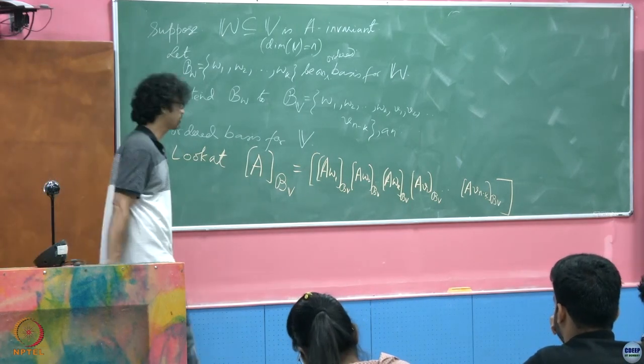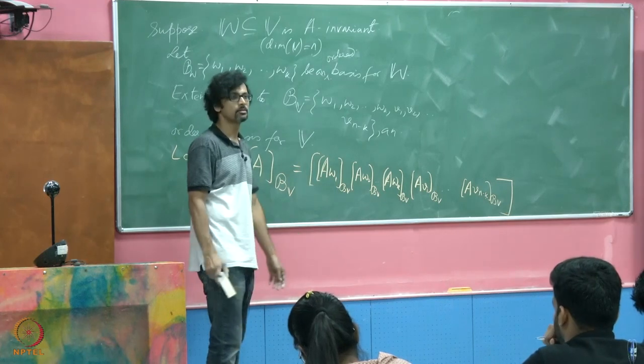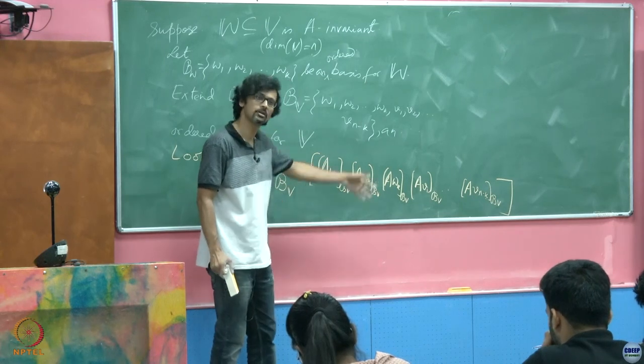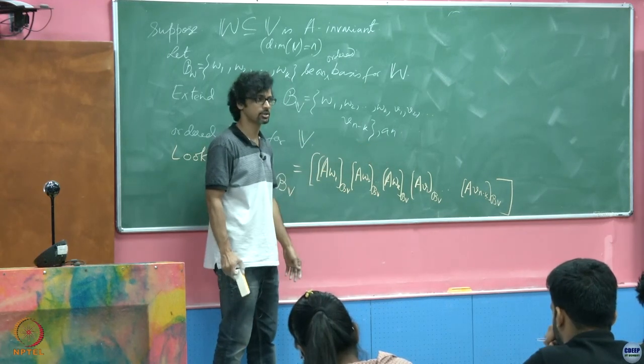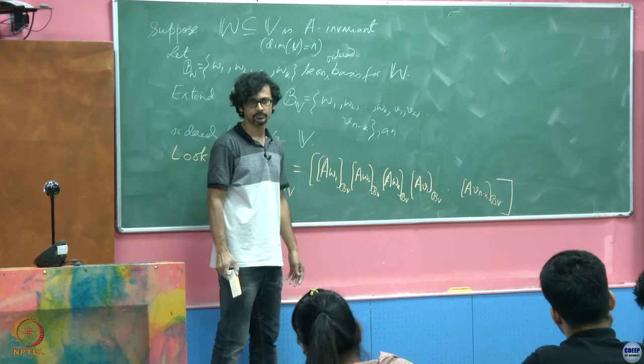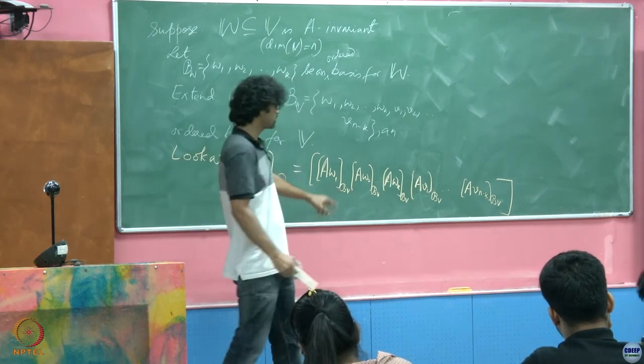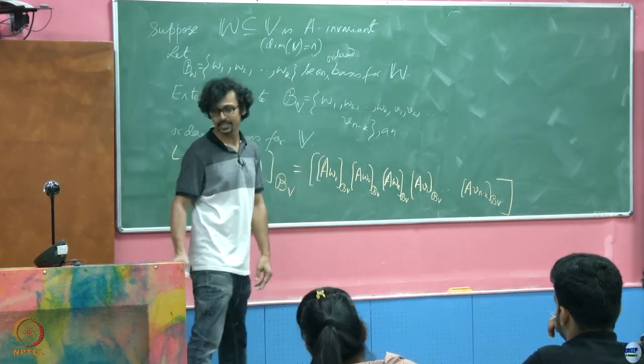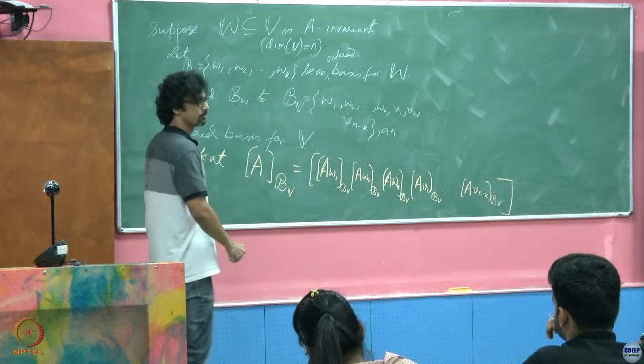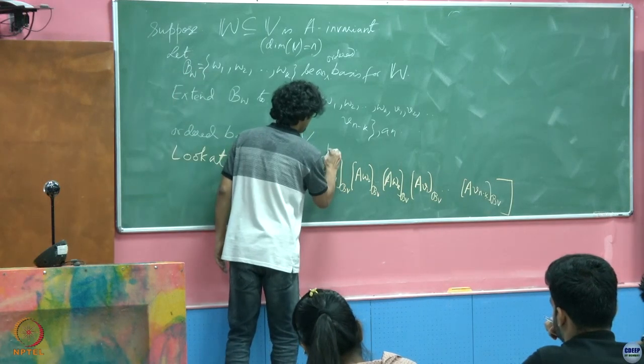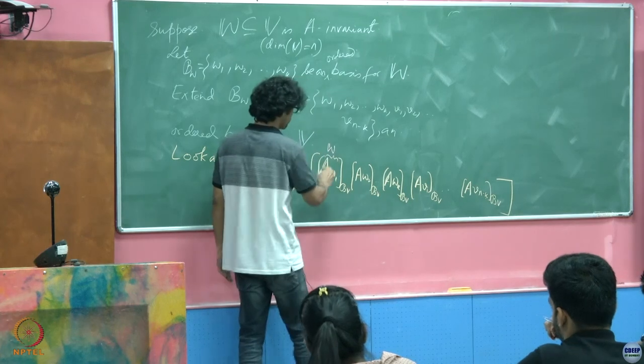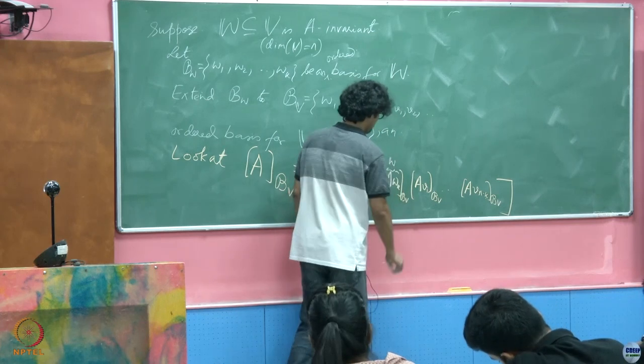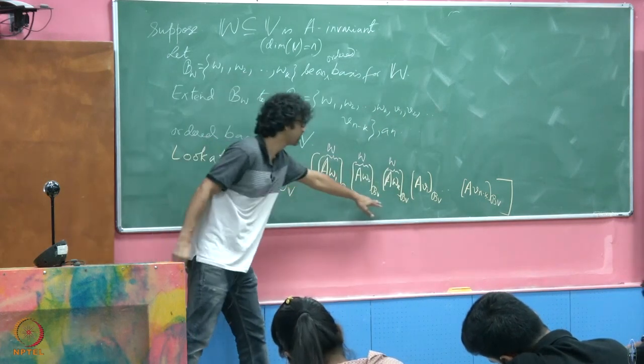The action of a linear transformation or a linear operator is captured by its action on each element on the basis, and therefore we just give it a coordinate representation and get the corresponding matrix representation of that linear operator, right. What do you think this is going to look like now? Where does this object reside, the object inside the box bracket? Because of the A-invariance, this little object resides inside W, so does this, and so does this, right? So do all of these first K fellows.